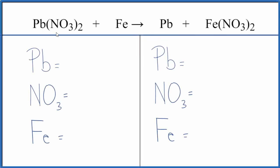In this video, we'll balance the equation Pb(NO3)2 plus Fe. That's lead two nitrate plus iron.